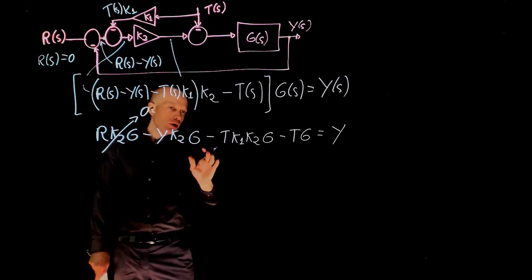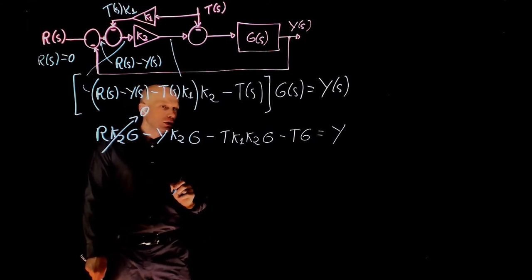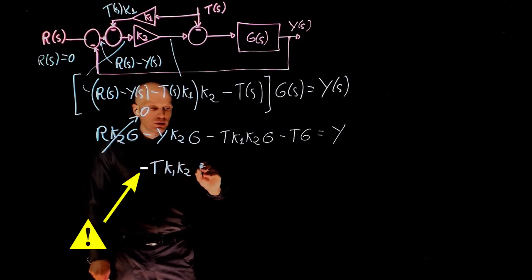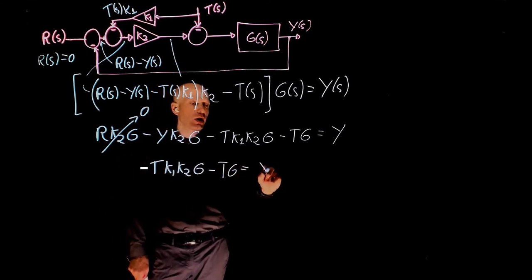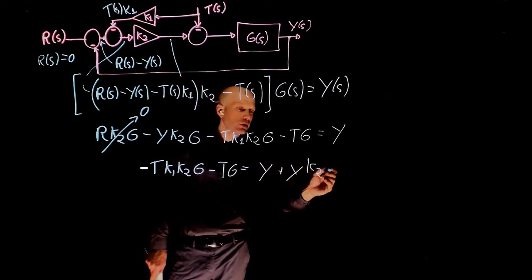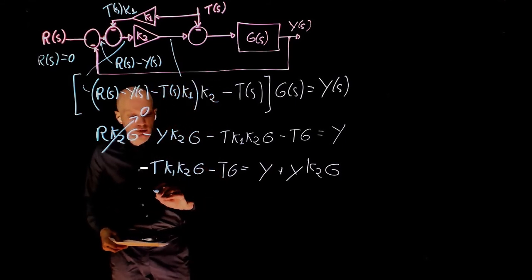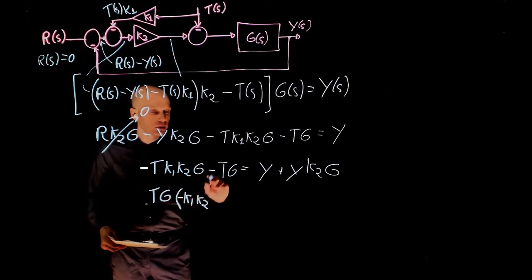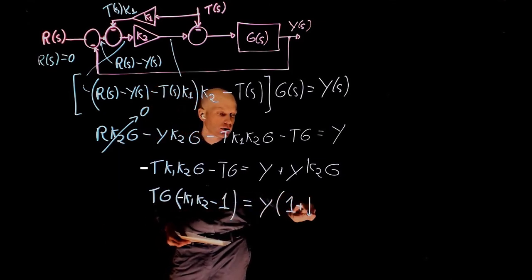Now let's keep all T's on this side and send Y's to the other side of the equation. We get negative T times K1 times K2 times G minus T times G equals Y plus Y times K2 times G. We can now factor T times G on this side of the equation.